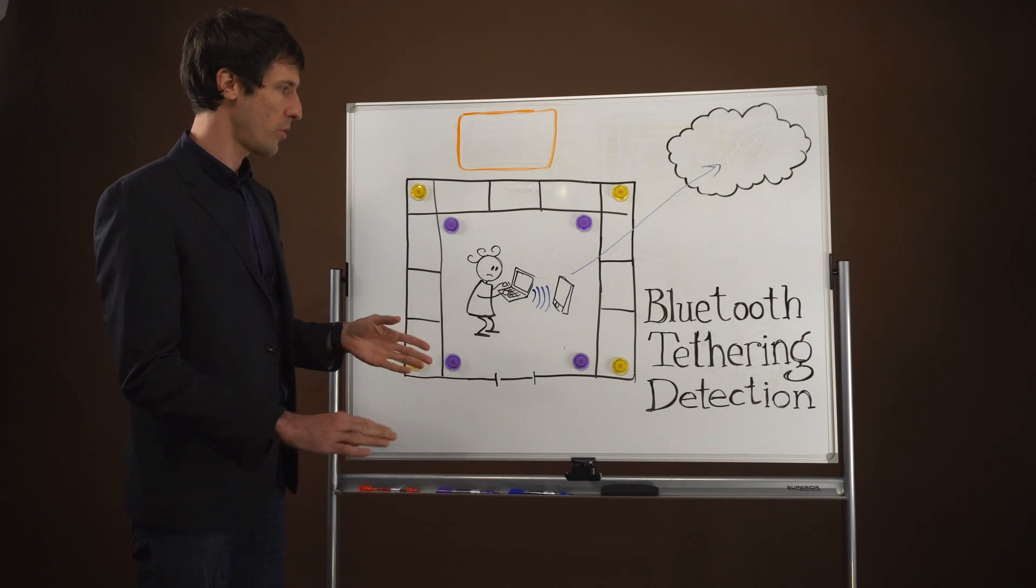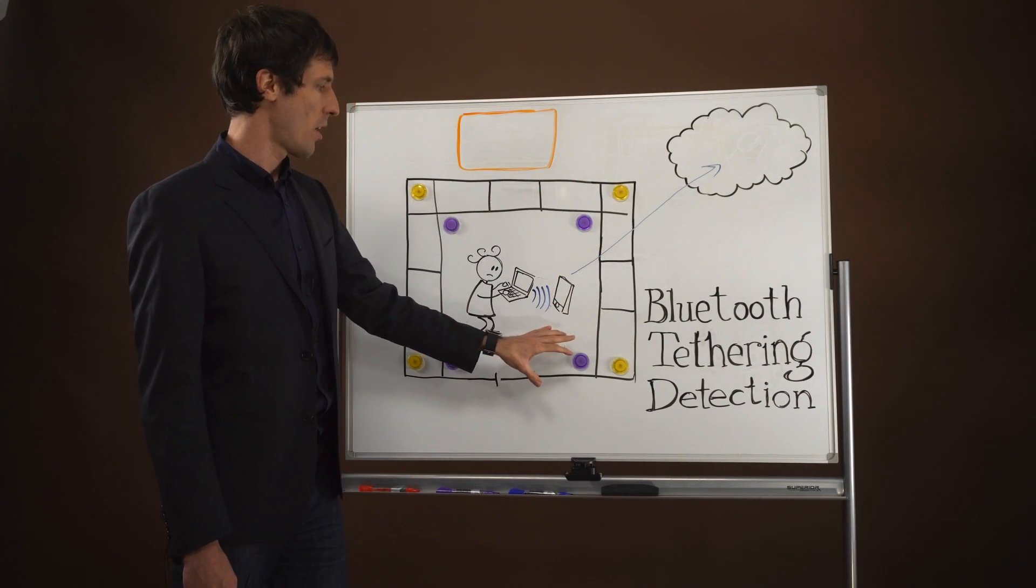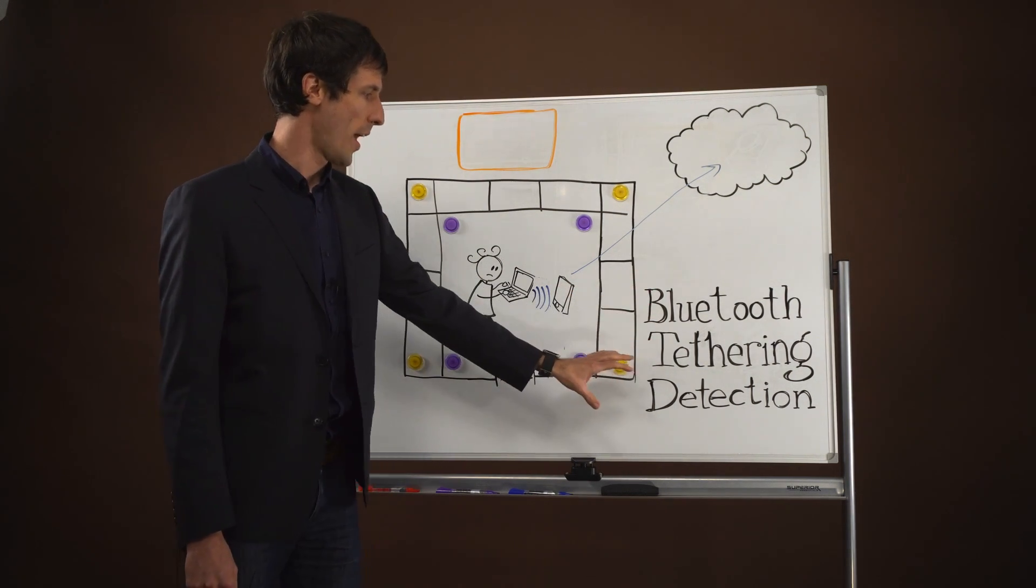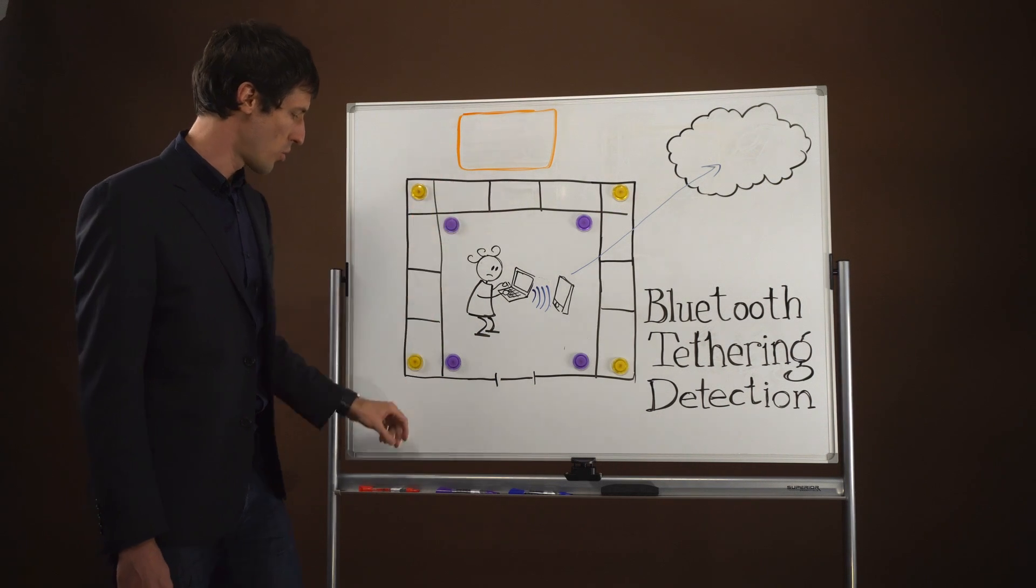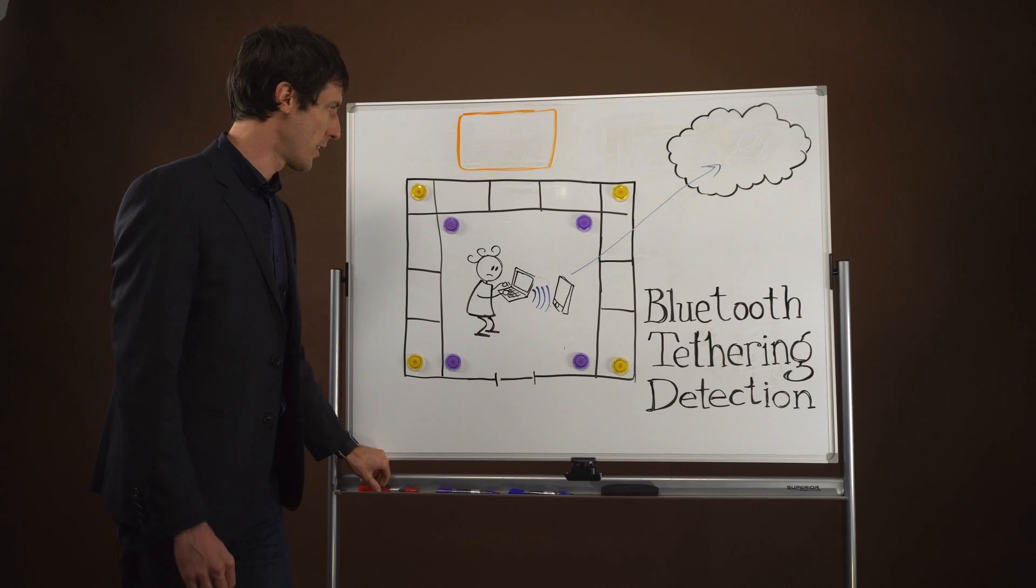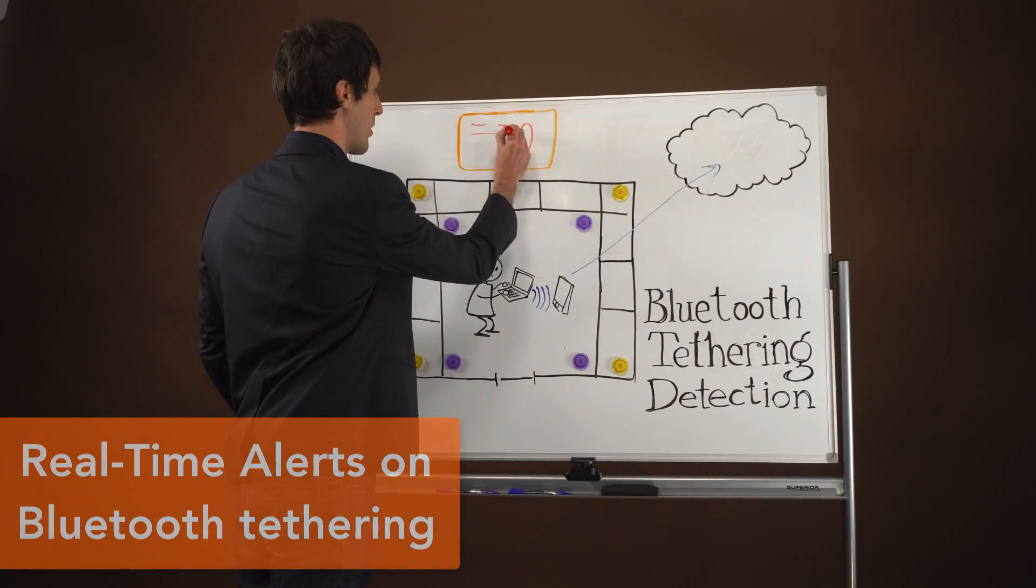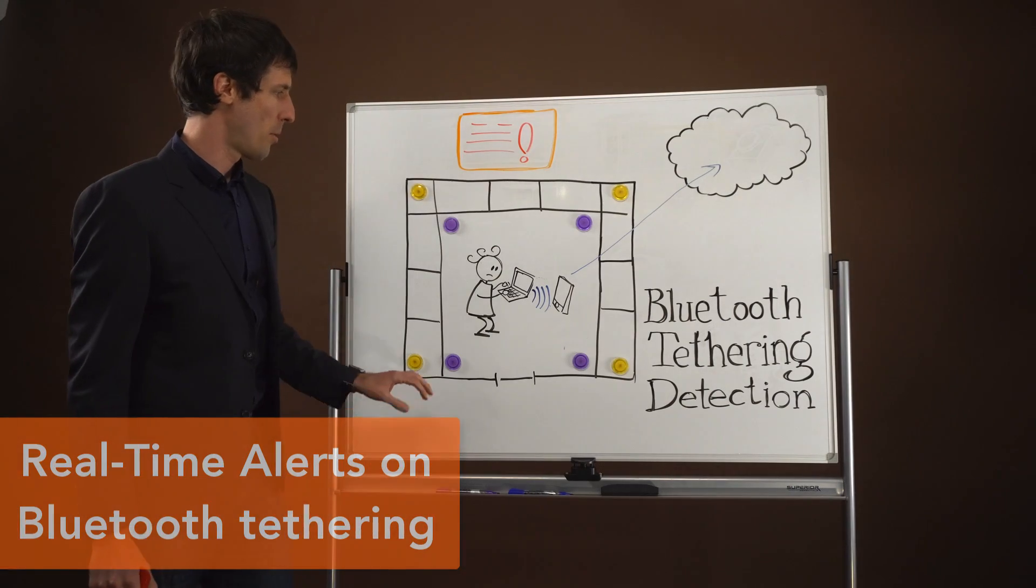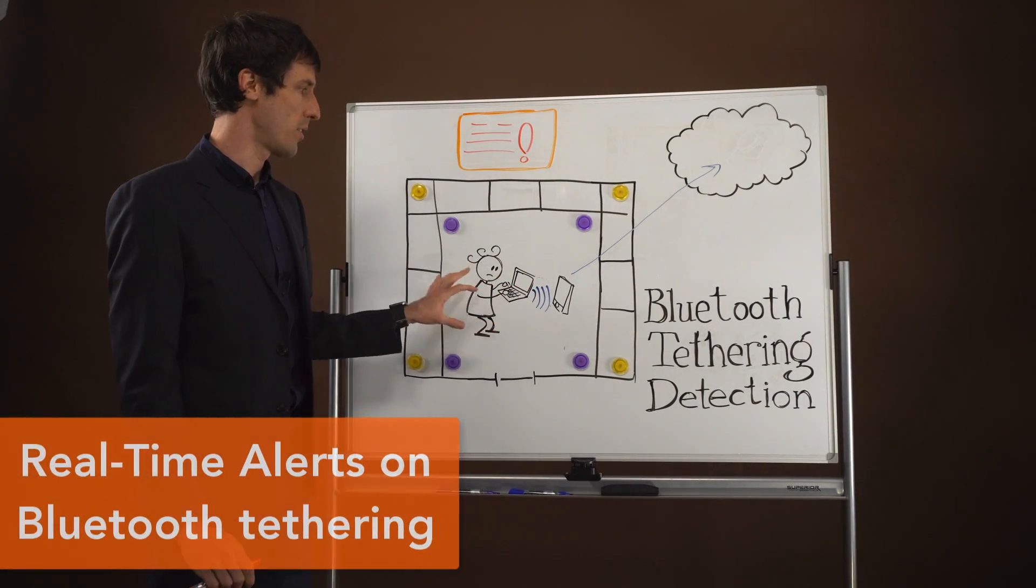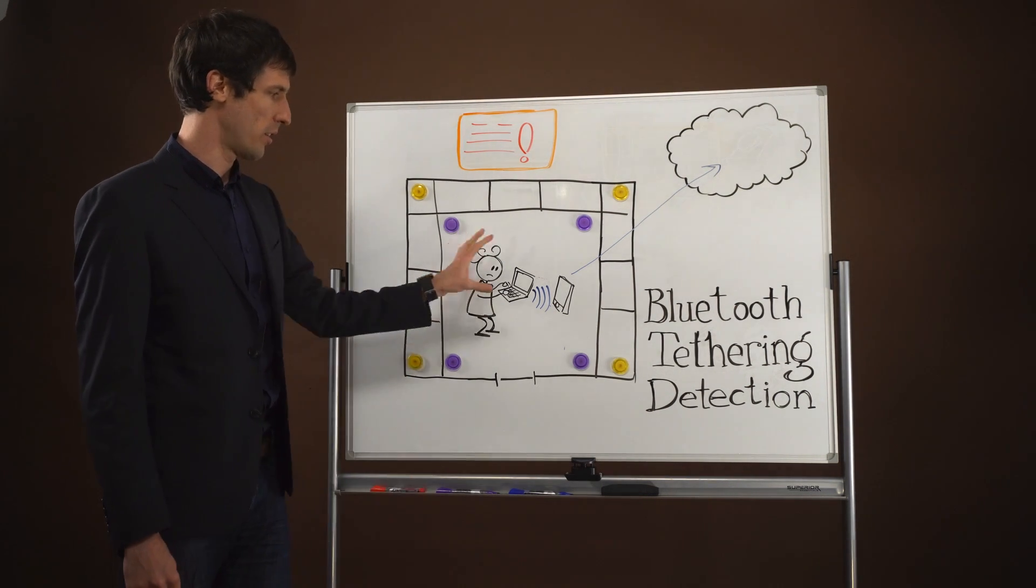And in this instance, they would actually receive the Bluetooth traffic and detect that tethering has taken place. If this is not desired within this office, then an alert can actually be thrown and security personnel will be notified that a tethering event has taken place and they can use that information to try to contain the situation.